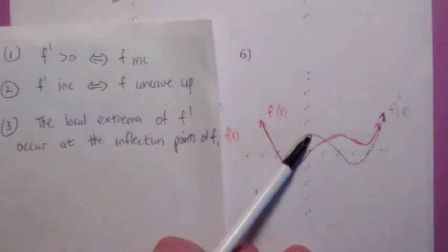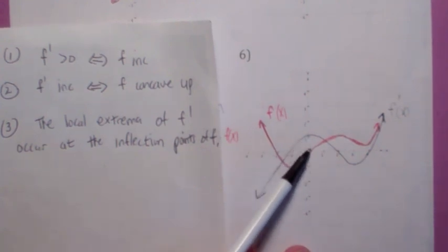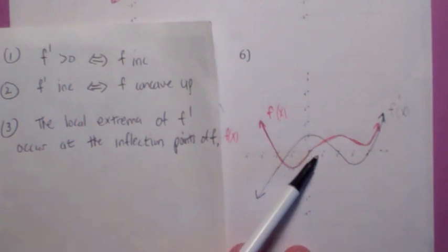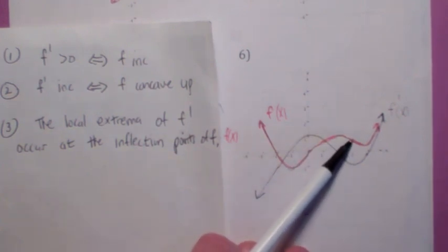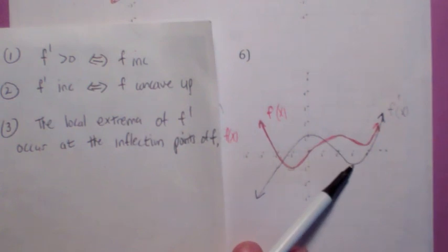And furthermore, f has a local max, you've got to have an inflection point. I should say f prime has a local max, so f has to have an inflection point. f prime has a local min, f has to have an inflection point. Whenever f prime has a local min, f has to have an inflection point.